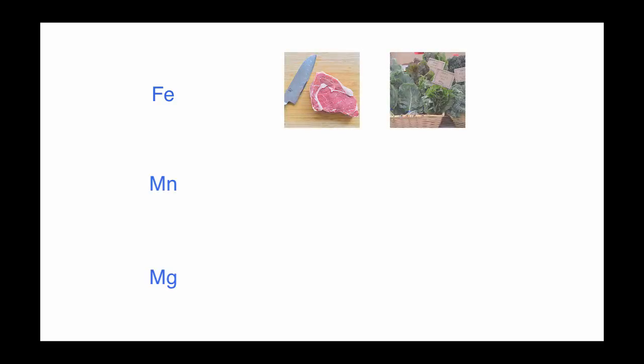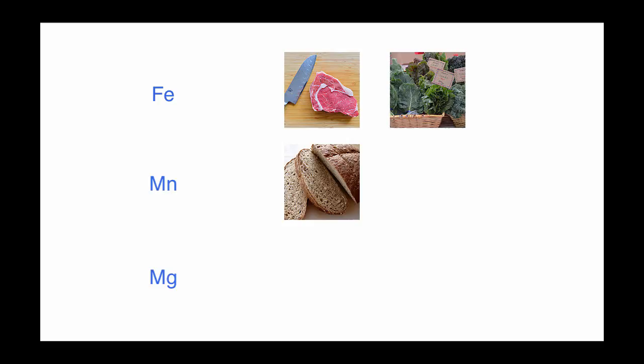The minerals that we'll cover are iron, manganese, and magnesium. Iron can be found in meats and leafy greens. Manganese can be found in whole grains, and magnesium can be found in nuts and legumes.